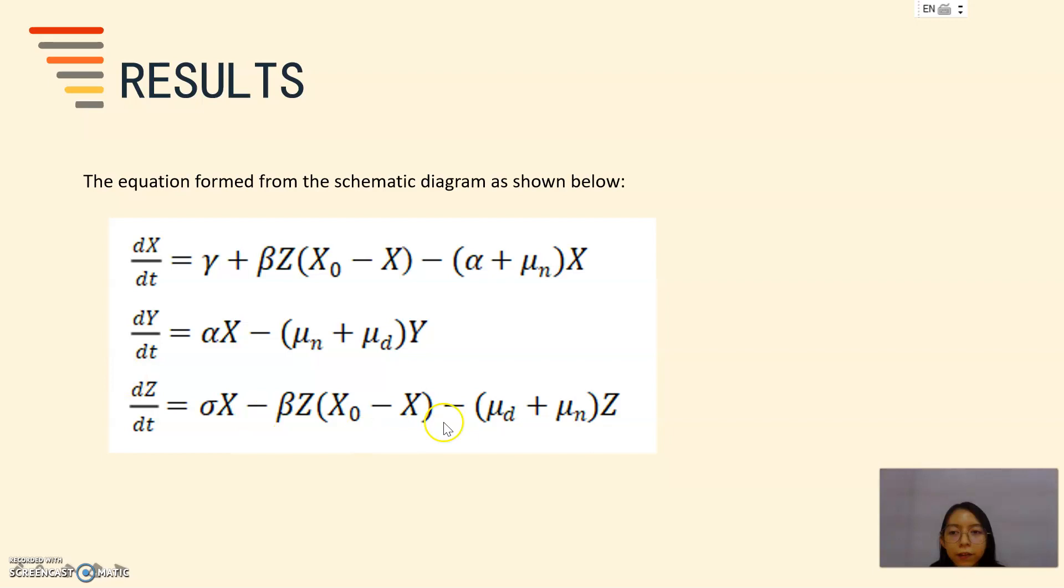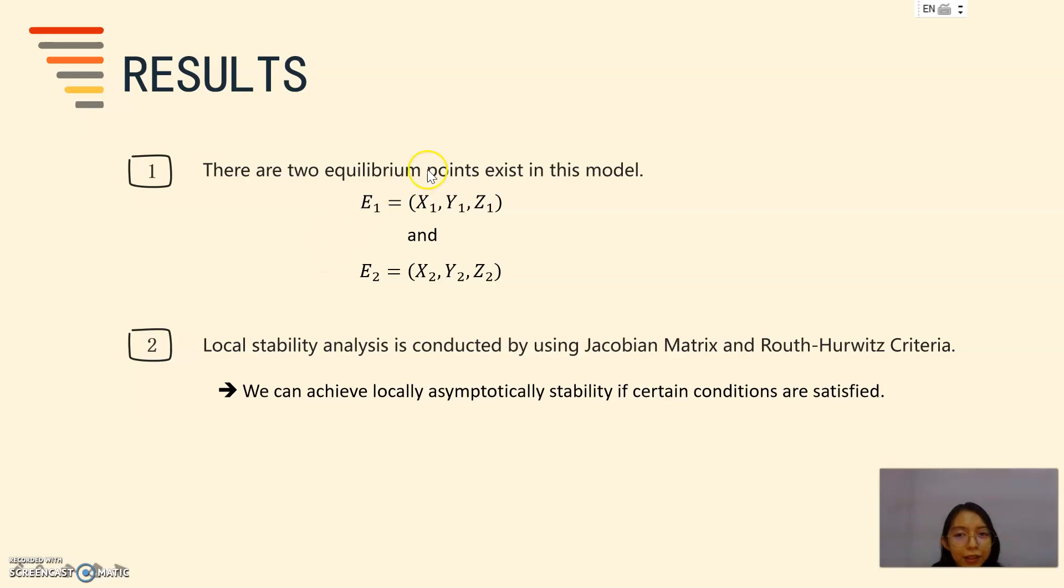There are three differential equations formed from the schematic diagram. The positive indicates the arrow in for the population. And the negative indicates the arrow out of the population.